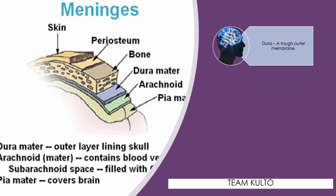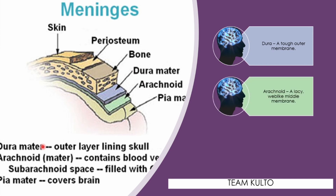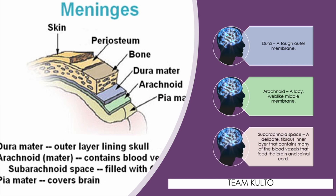Here's the illustration of the meninges layers. First, you have your dura — that's the tough outer membrane, the dura mater. Next, you have your arachnoid — this is the lacy, web-like middle membrane. Then you have your subarachnoid space — a delicate fibrous layer that contains many of the blood vessels that feed the brain and spinal cord. Anatomically, meningitis can be divided into inflammation of these layers, located between the pia mater and the arachnoid.